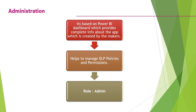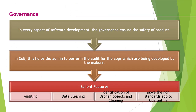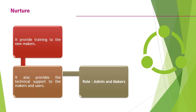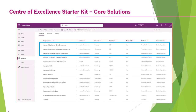Administration is used by the admin role to manage DLP policies and permissions. A Power BI dashboard is provided that gives information about the different apps and flows created by makers in your environment. Governance helps the admin team perform audits of apps developed by different makers. Nurture provides training to new makers and technical support — both makers and the admin role can use it.